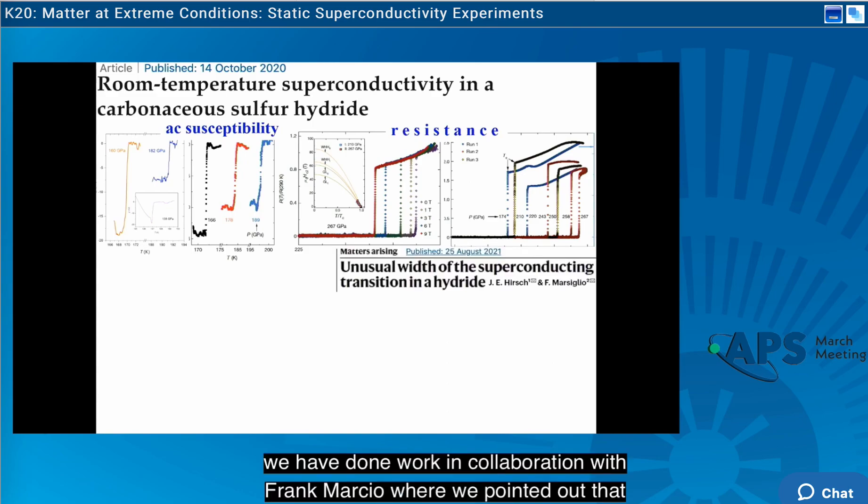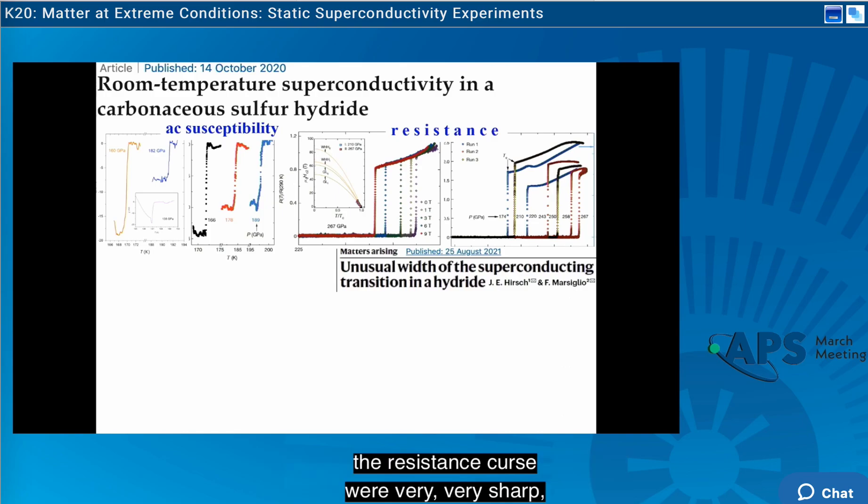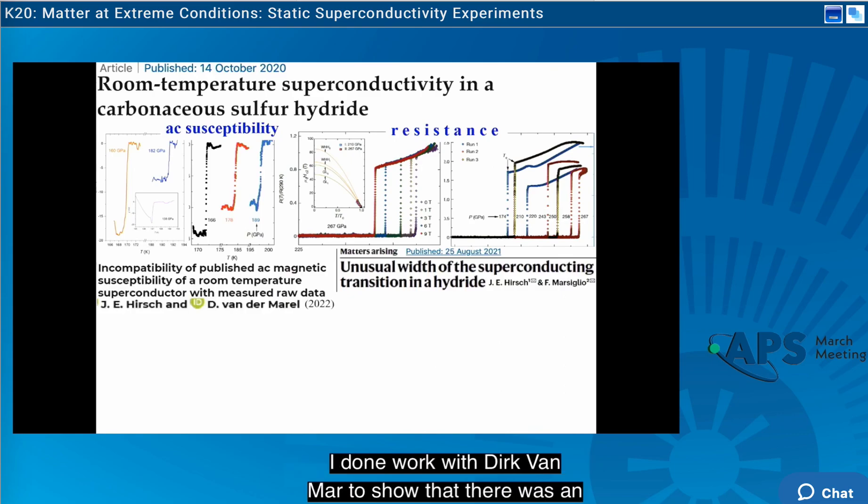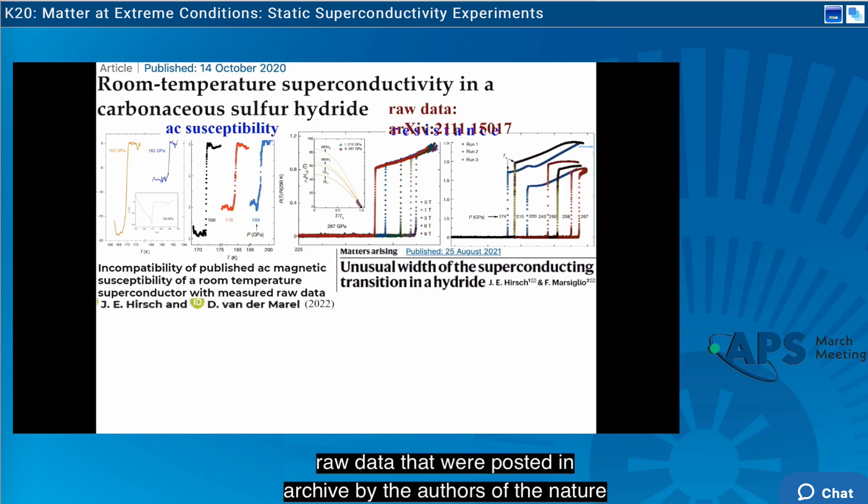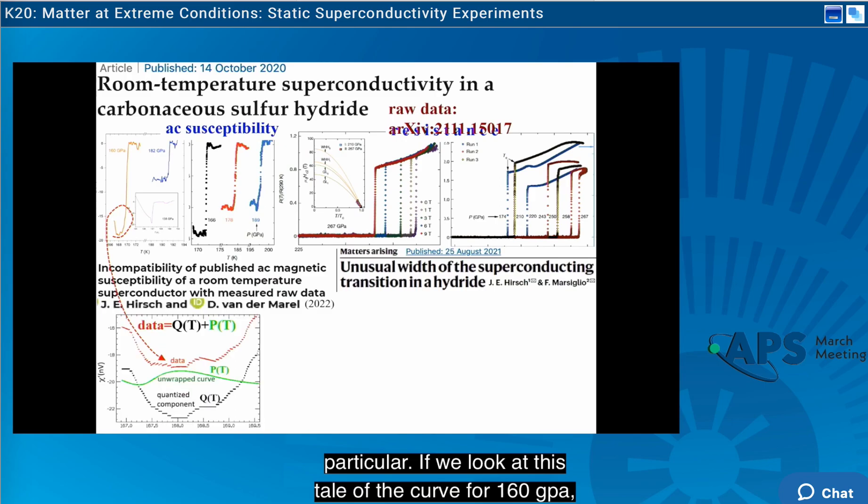We have done work in collaboration with Frank Marsiglio where we pointed out that the resistance curves were very sharp, incompatible with what you expect for a superconductor. And I have done work with Dirk van der Marel to show that there was incompatibility with the raw data that were posted in arXiv by the authors of the Nature paper and the published data in the Nature paper. In particular, if we look at this tail of the curve for 160 GPa,